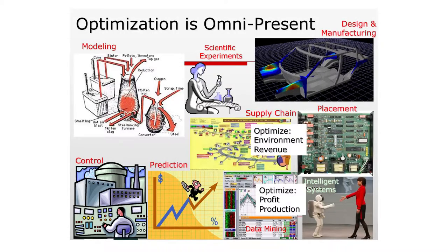With that introduction, let's look at the scope of optimization in practice. This is a busy slide, but it covers many areas. For design and manufacturing, you see parameters like angles, thicknesses, and materials — those are your variables. If you're designing a cab, you figure out what dimensions minimize overall weight, or minimize the force on a passenger in a front crash. In VLSI, you're interested in placing small components so that overall area is minimized.